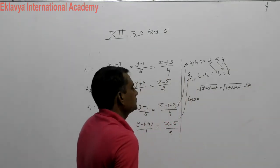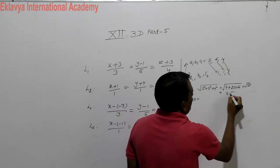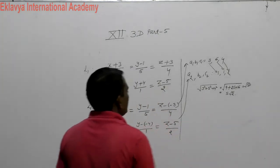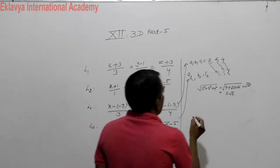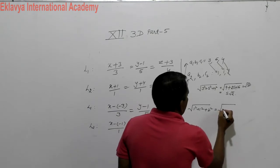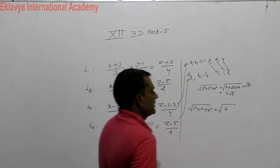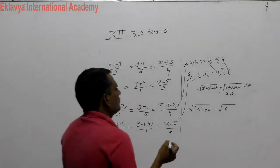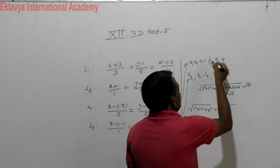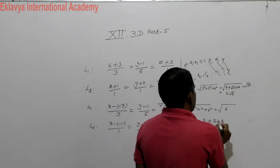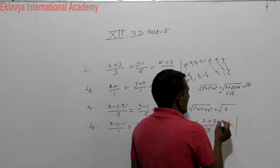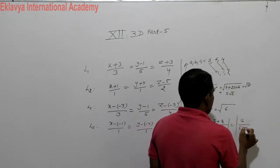Next, we calculate the magnitude of Line 2's direction vector: root of 1 squared plus 1 squared plus 2 squared, which gives root of 6. These are the magnitudes of the two direction vectors. Now the angle between these two lines: first we compute the dot product, which is 3 times 1 plus 5 times 1 plus 4 times 2, giving 3 plus 5 plus 8 equals 16, over 5 root 2 into root 6.